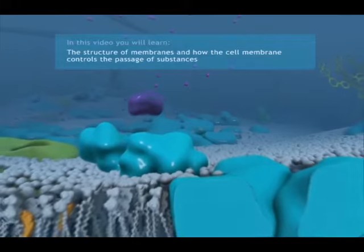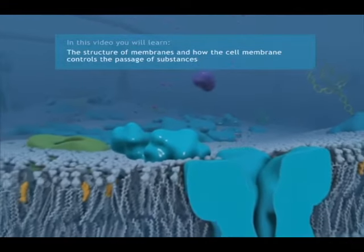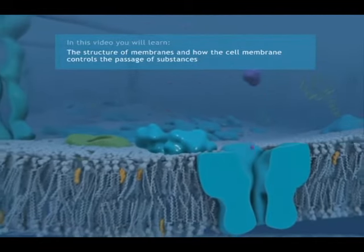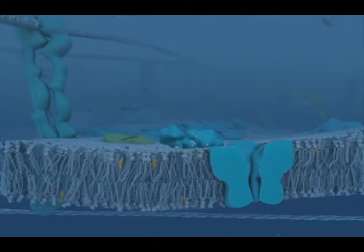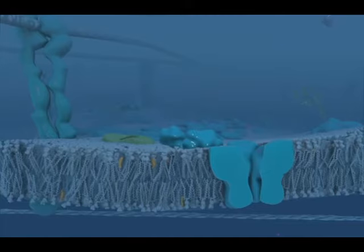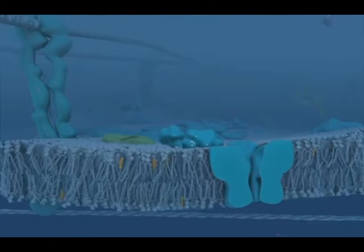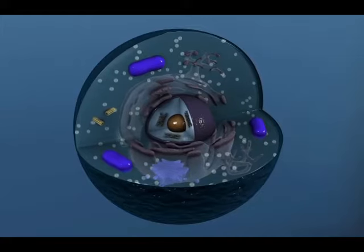In this video, you will learn about the structure of membranes and how the outermost membrane of a eukaryotic cell, the cell membrane or plasma membrane, controls the passage of substances. However, the same general principles of membrane traffic also apply to the many varieties of internal membranes that partition the eukaryotic cell.